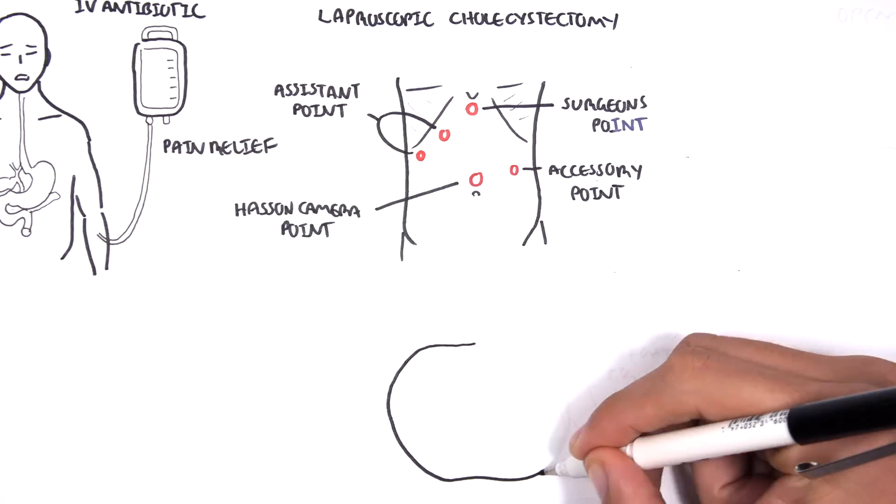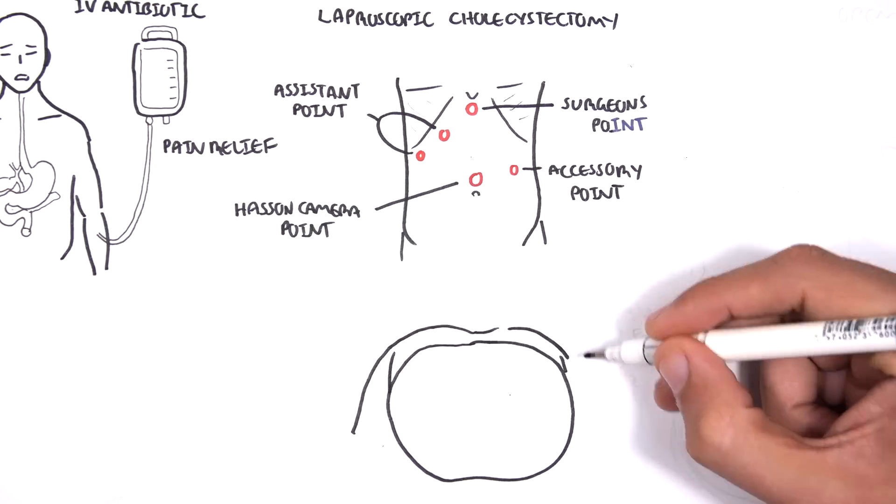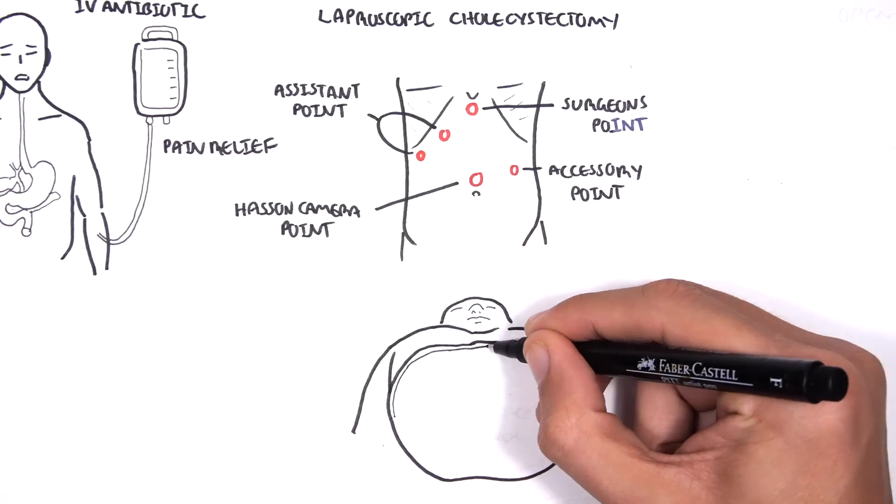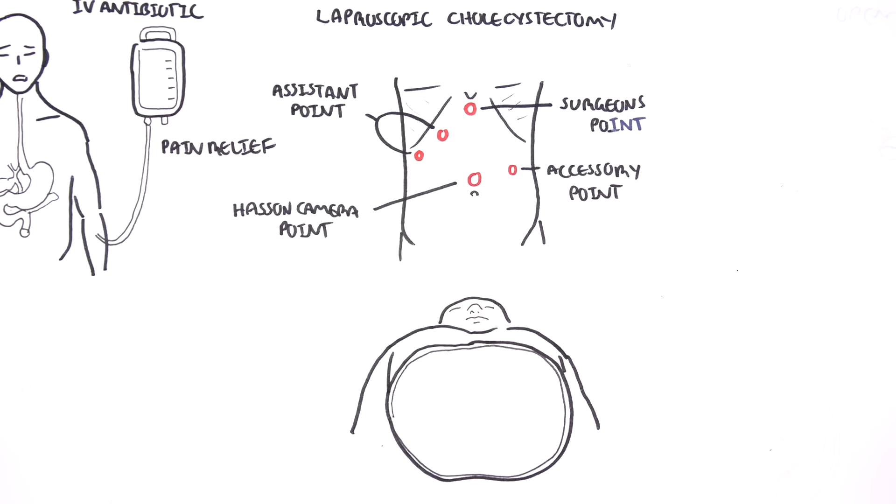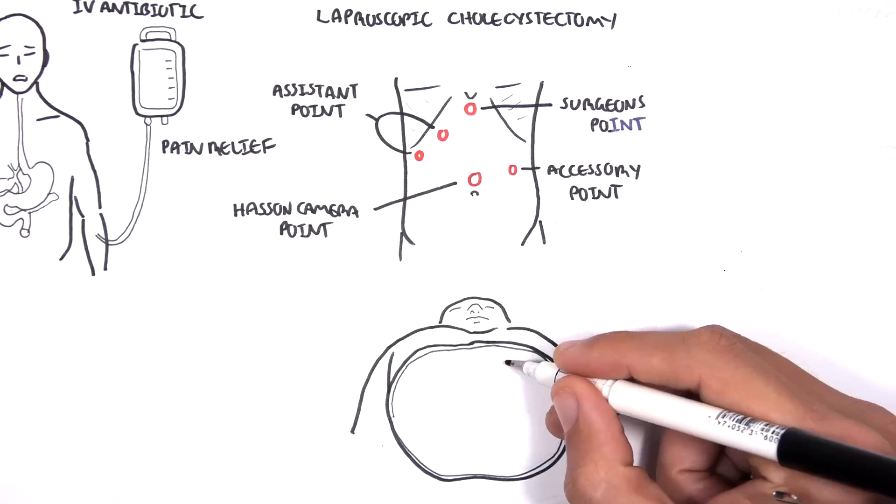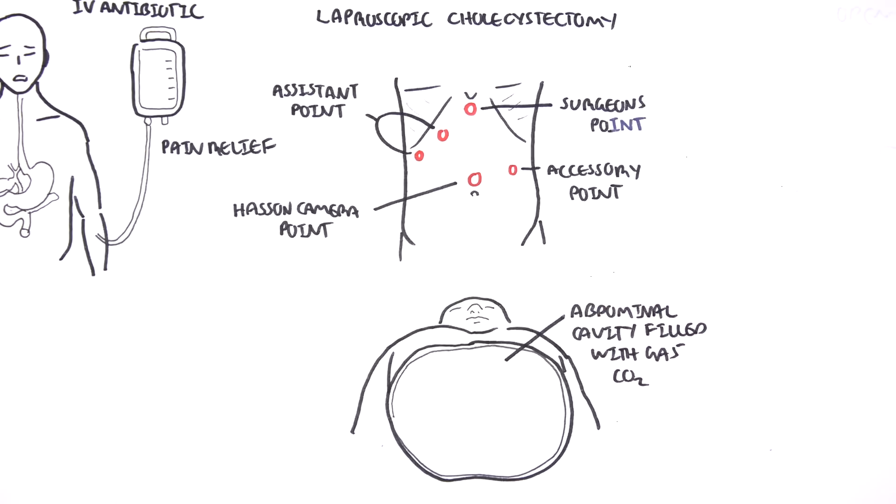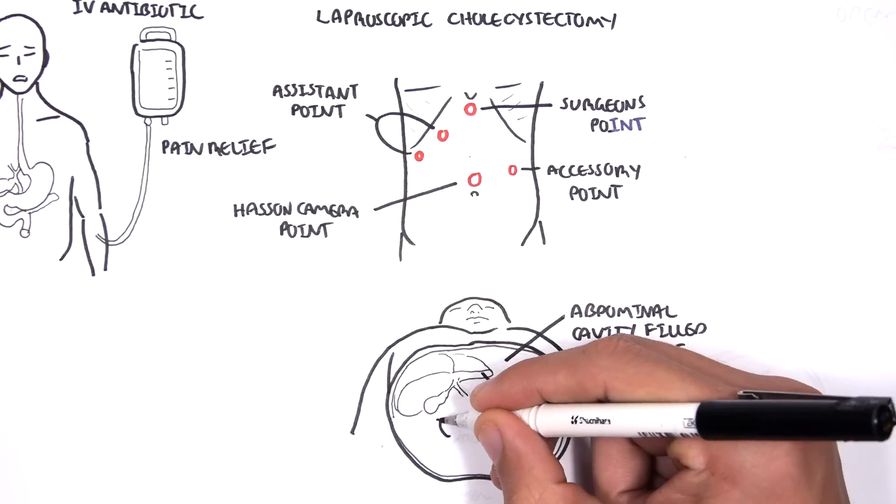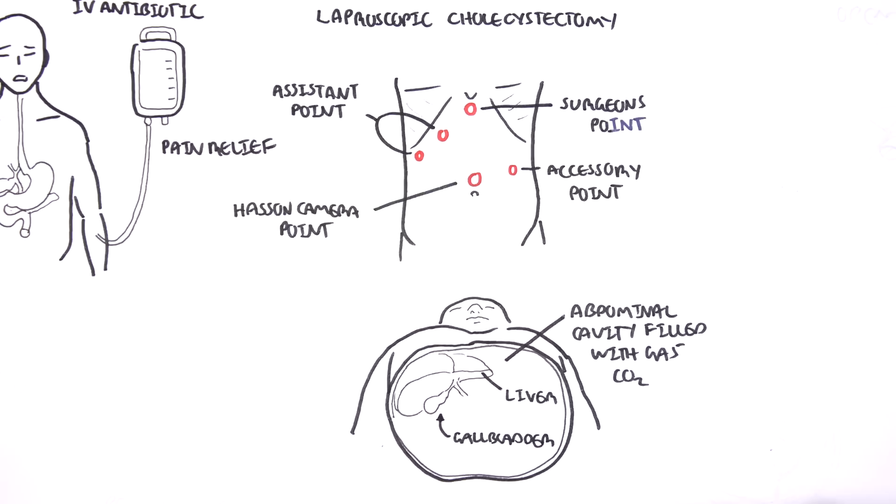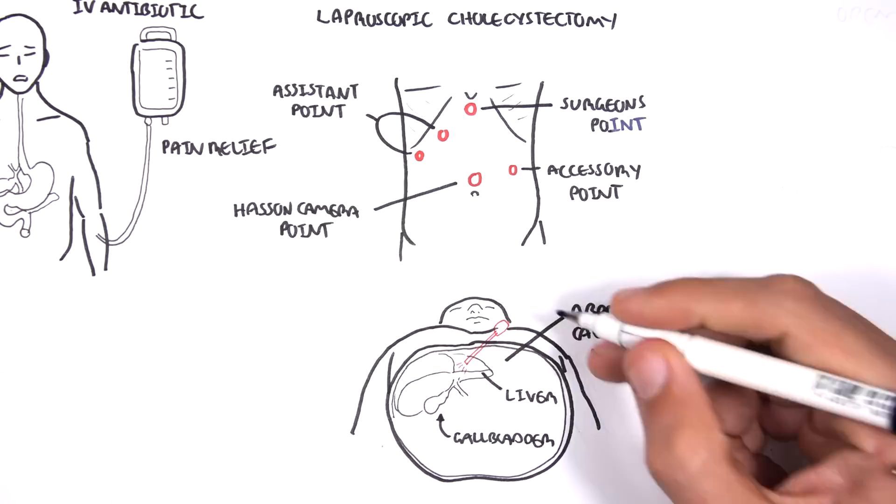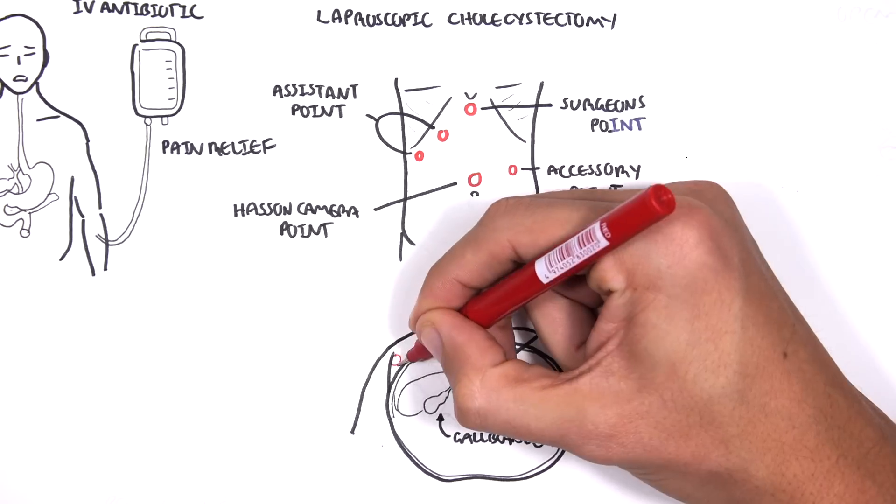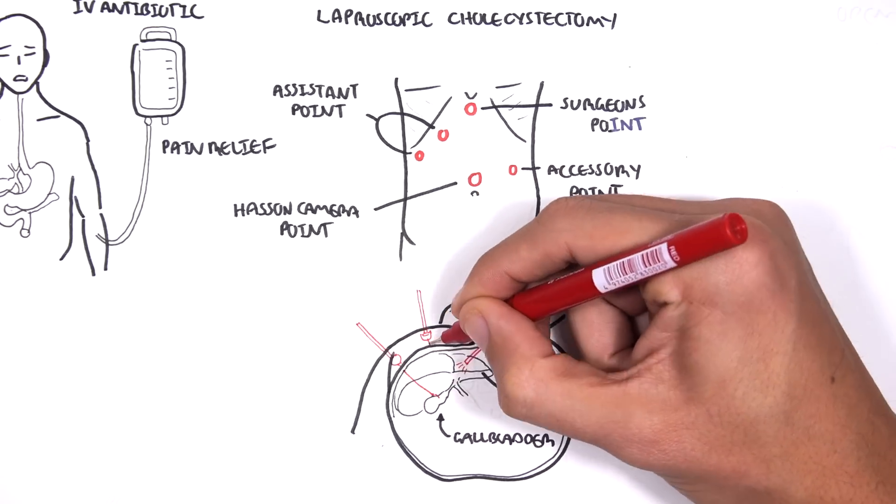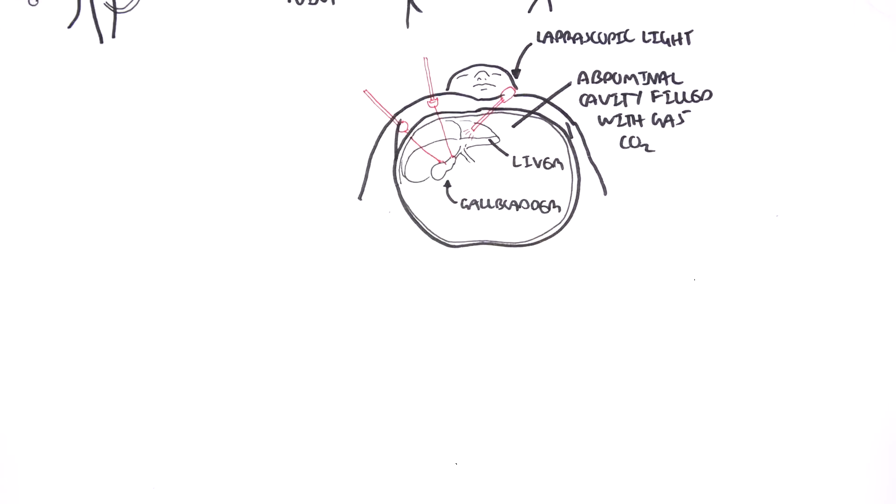Let us look inside the abdomen from an inferior view. The abdominal cavity is pumped with air, carbon dioxide, and this makes the surgeon's work easier as it creates space. So here is the liver, the gallbladder. Here is the laparoscopic light that views the area from the Hassan camera point. And the two assistant ports as examples of how things are assessed in the area.